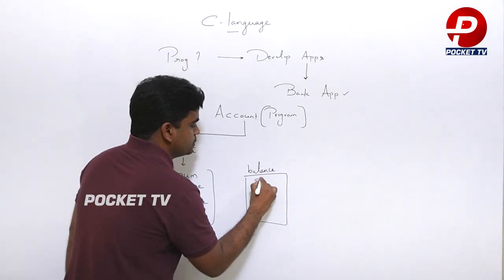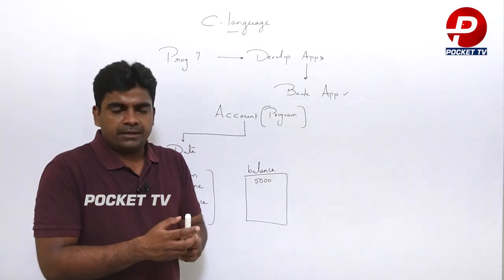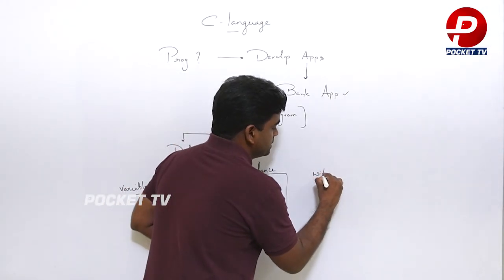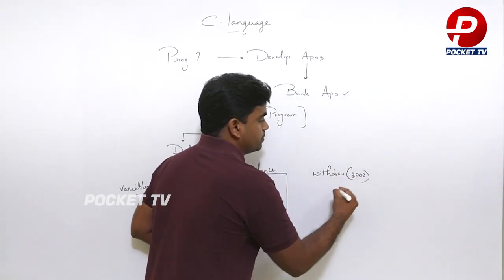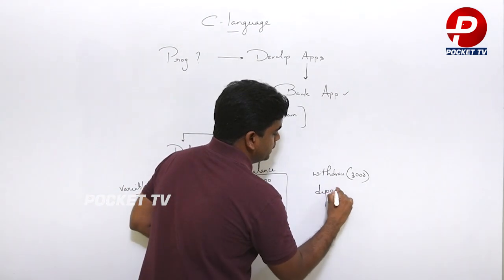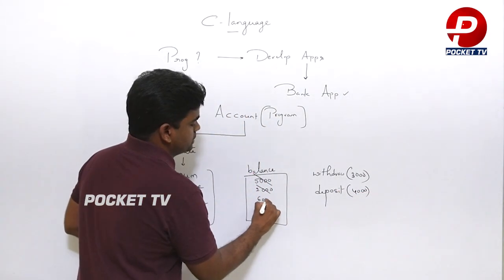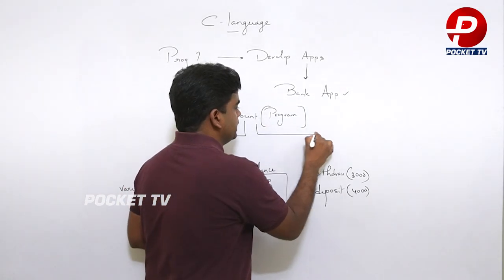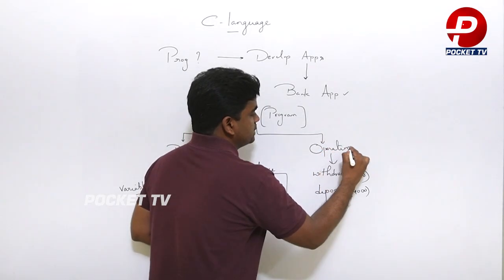Variables are used to store information. For example, I take a variable called 'balance' and store the balance value. If I want to modify this balance, I need to perform operations — like a withdraw. If I withdraw 3000 rupees, the balance is modified. If I deposit 4000, the balance becomes 6000. Only by performing operations can we modify the data.